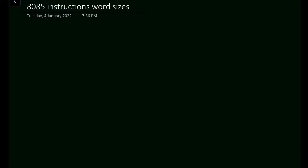Before starting, I would like to inform you that there are basically two parts in an instruction. Let us consider the instruction MOV A, B. In this instruction we have to find out the opcode and the operand. The opcode means it is the operation code. The meaning of this instruction is: move the content of register B to the accumulator. Suppose the content is 05H — this content will be moved to the accumulator.